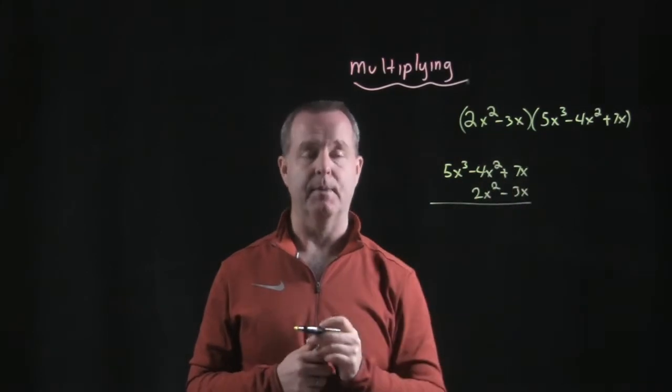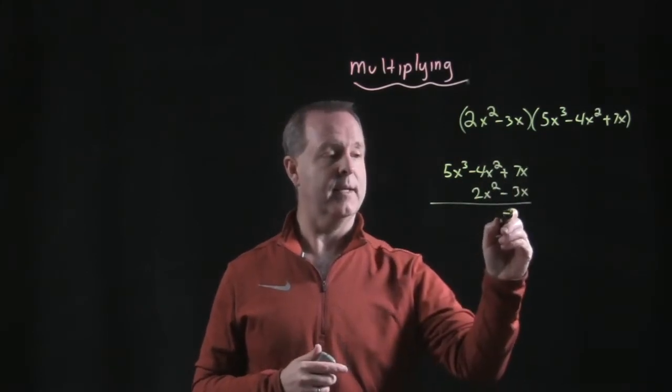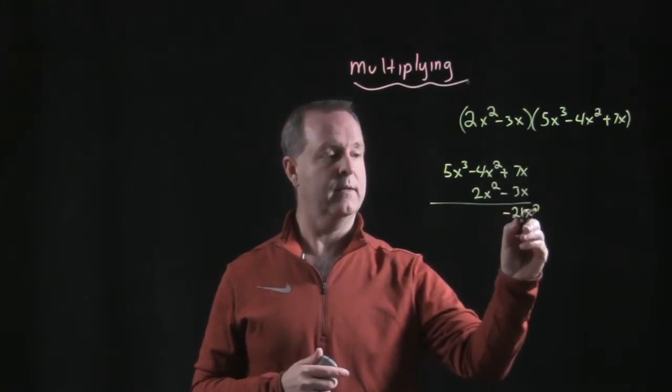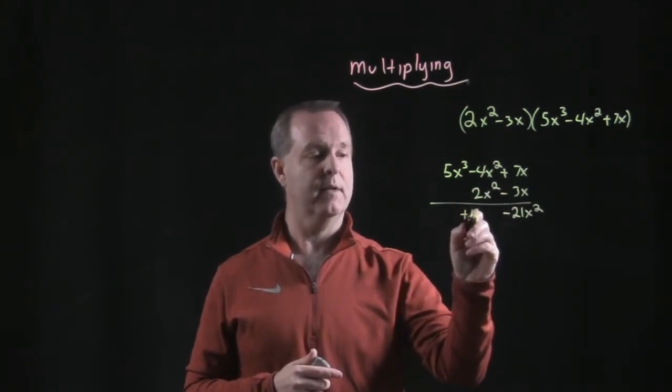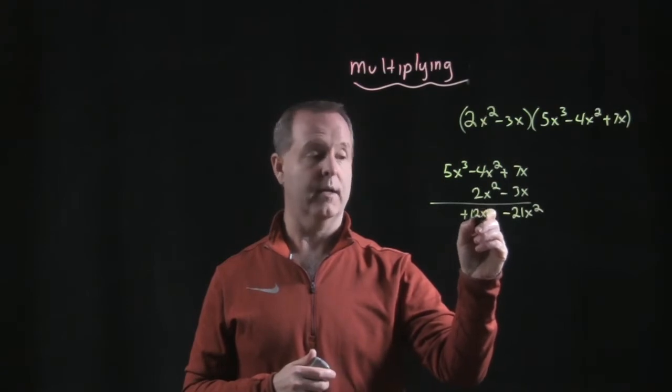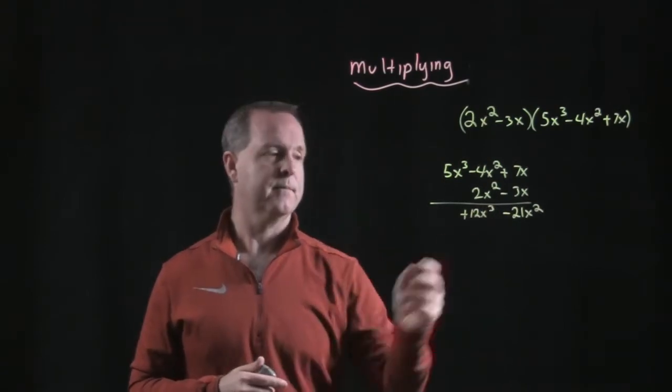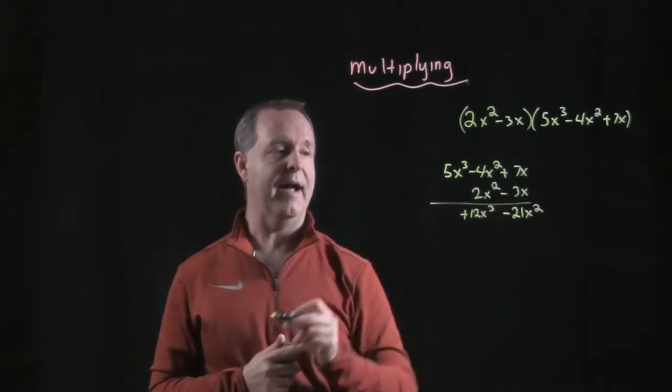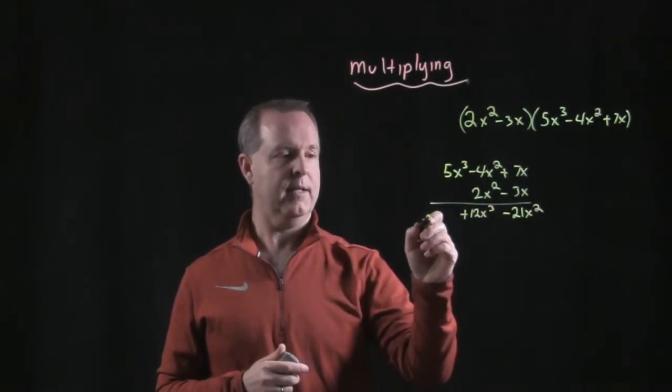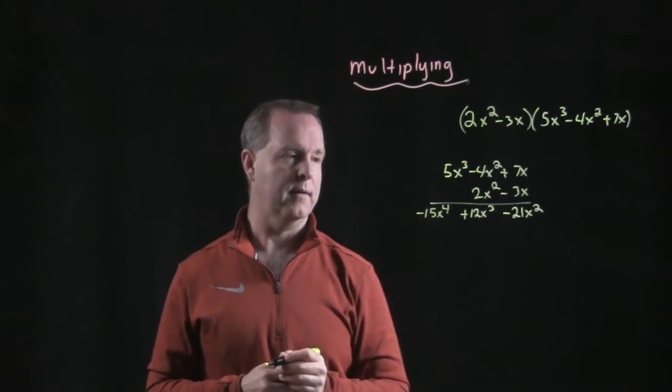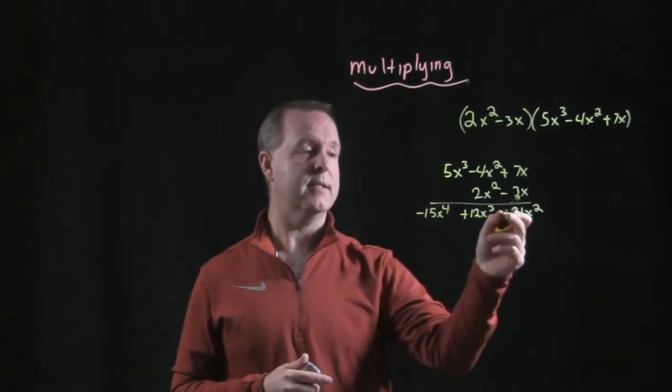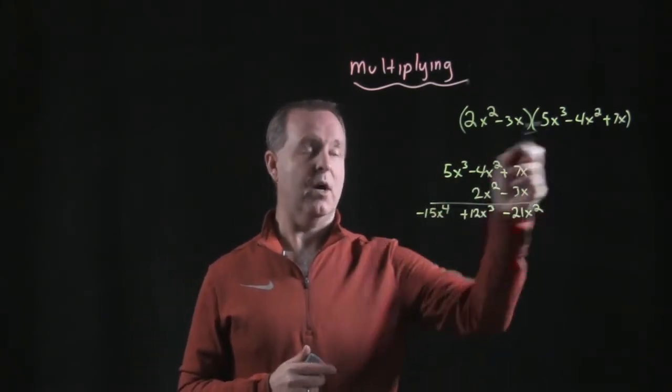Negative 3x times a positive 7x gives me negative 21x squared, negative 3x times a negative 4x squared gives me a positive 12x to the cubed, negative 3x times 5x cubed gives me negative 15x to the fourth. So notice I distributed this negative 3 across all those terms.